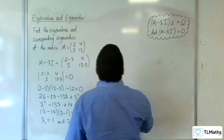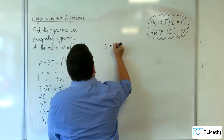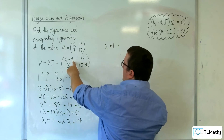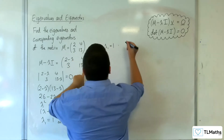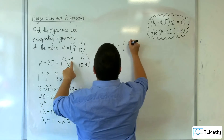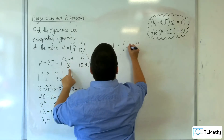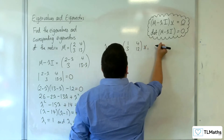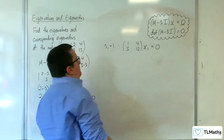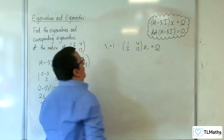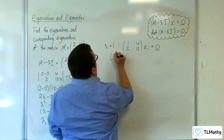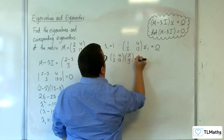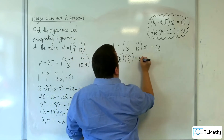Now we need to find the corresponding eigenvectors. For lambda 1 equals 1, we want to substitute lambda 1 into this, so 1 goes in here. So we are going to have 2 take away 1, so 1, 4, 3, and then 13 take away 1, so 12. That's going to multiply with your first eigenvector and give you 0. So we've got 1, 4, 3, and 12 times x, y is going to be equal to the 0 vector.